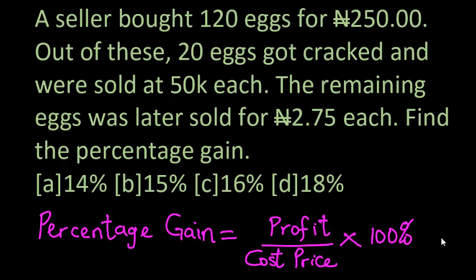The value to be found now is the percentage gain. To get the percentage gain, the formula is profit divided by cost price times 100%. Here we need to find the profit because it has not been given to us in the question. We need to find the cost price, the total amount, which has been given to us as 250 naira. Then we need to find the profit before we can get the percentage gain.